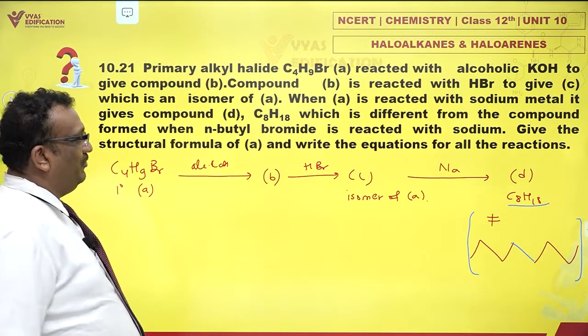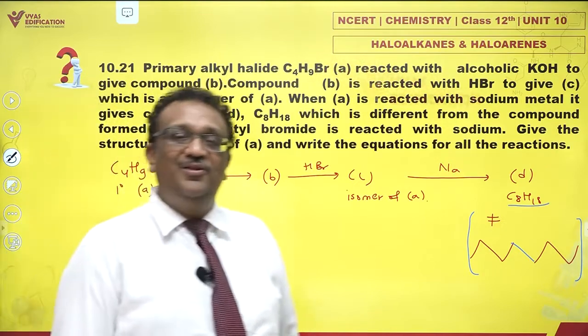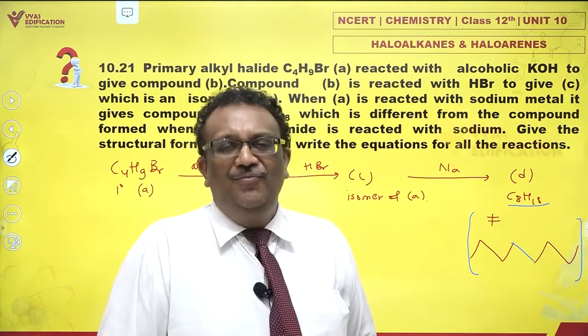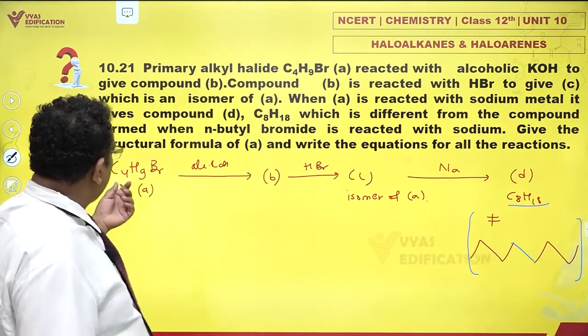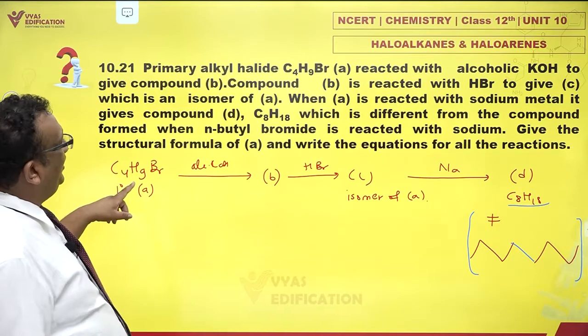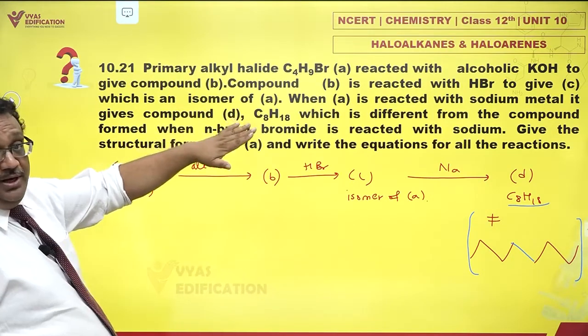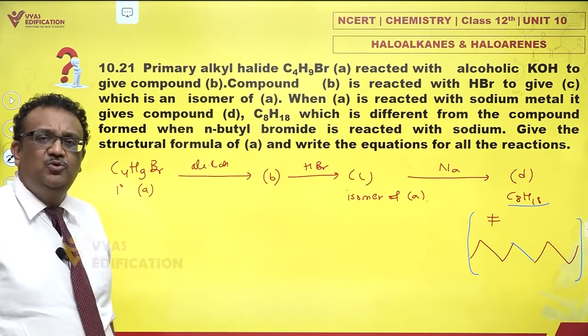Give the structural formula of A and write the equations for all the reactions. We have been given major hints, so let's try. The very first hint is this is primary. Now if I have a butyl bromide, how many butyl groups do I get?